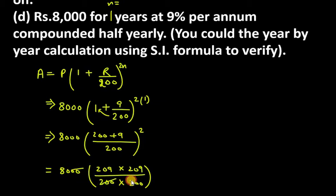Now cancel the zeros. Now 2 remains in denominator, 8 in numerator, so we get 4. In the denominator is 20, and here we have 4 in the numerator. So this becomes 1 and this becomes 5. Now multiply 209 twice and divide by 5. When you multiply and divide, you get the answer 8,736.20.